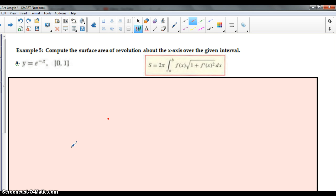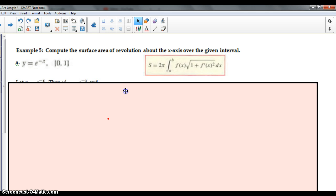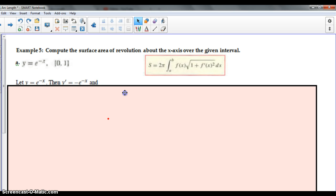We're going to do y equals e to the negative x from 0 to 1 using the formula for surface area. The reason why this problem becomes so tedious is we know how to find the derivative negative e to negative x, but it's the squaring and the adding one and the plugging into the formula that makes it difficult to evaluate.